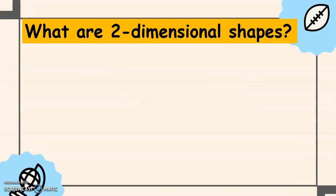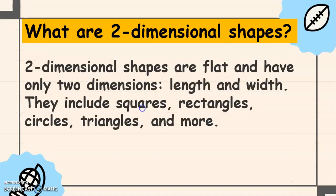And now, what are 2-Dimensional Shapes? 2-Dimensional Shapes are flat and have only 2 dimensions, length and width. They include squares, rectangles, circles, triangles, and more.